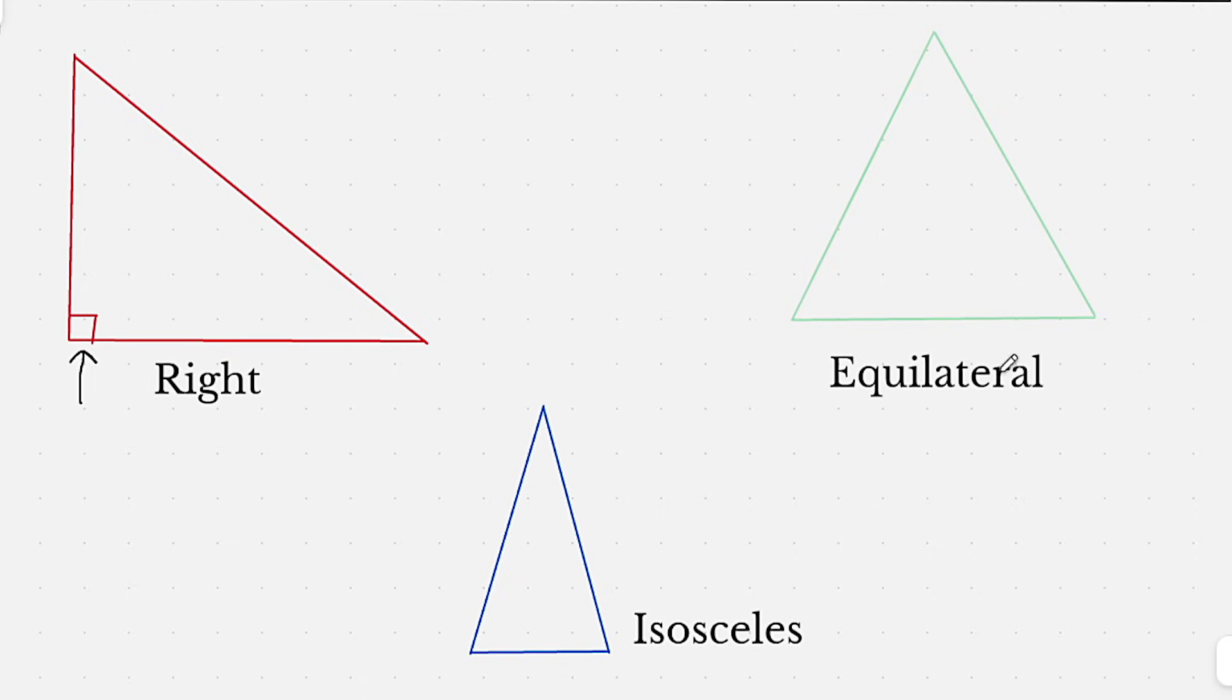For equilateral triangles, you need to remember that all the sides are equal, so that means you have equal angles as well. And since you can only have 180 degrees in a triangle, by definition, they would all have to be 60, right? Because 60 times 3 is going to be 180. So that's really important to know about equilateral triangles.